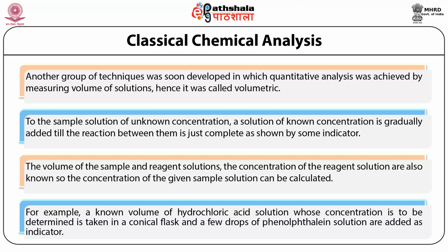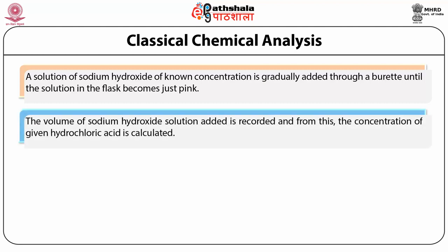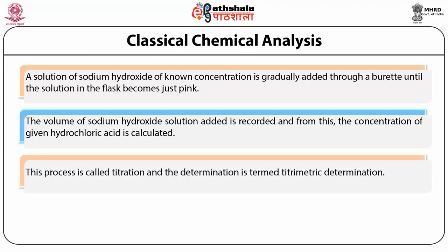For example, a known volume of hydrochloric acid solution whose concentration is to be determined is taken in a conical flask, and a few drops of phenolphthalein solution are added as indicator. A solution of sodium hydroxide of known concentration is gradually added through a burette until the solution in the flask becomes just pink. The volume of sodium hydroxide solution used is recorded, and from this the concentration of the given hydrochloric acid is calculated. This process is called titration, and the determination is termed titrometric determination.